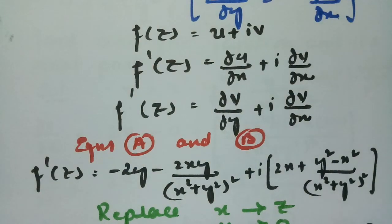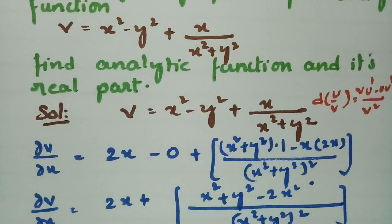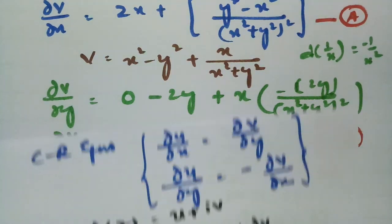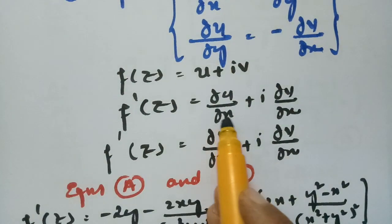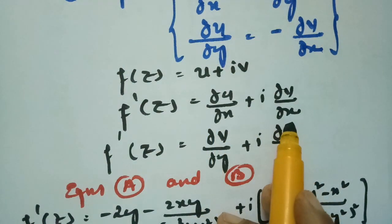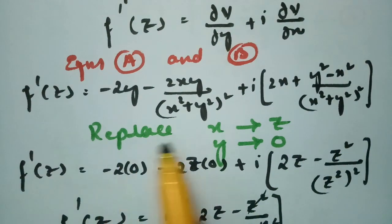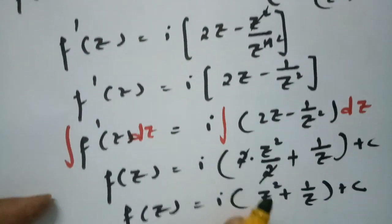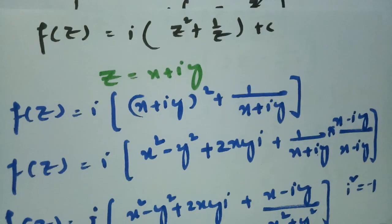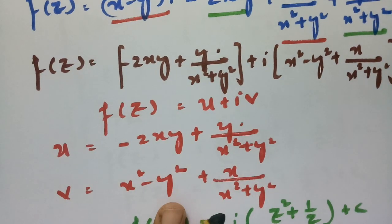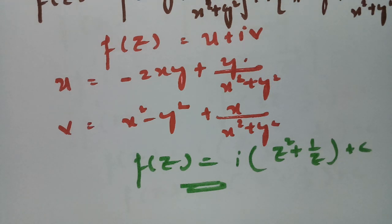This is also simple when the imaginary part is given. We differentiate with respect to x once and y once. According to the Milne-Thomson method, since I have only v values, I transformed dou u by dou x as dou v by dou y. I substituted from equations 1 and 2, replaced x by z and y by 0, integrated both sides to get the analytic function, then substituted z as x plus iy to get real part u, imaginary part v, and analytic function f(z). Thank you so much for staying till the end — practice and you can score more.